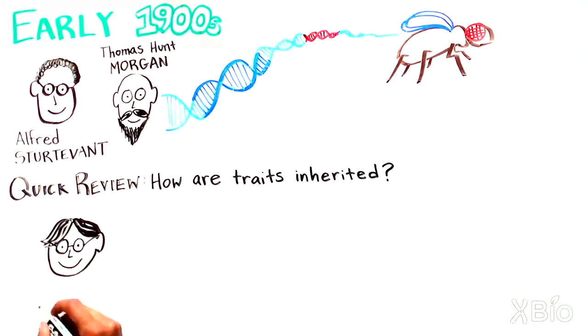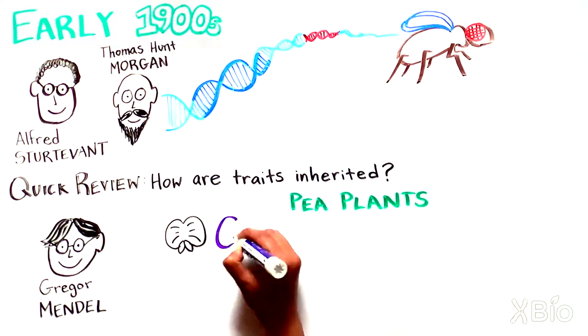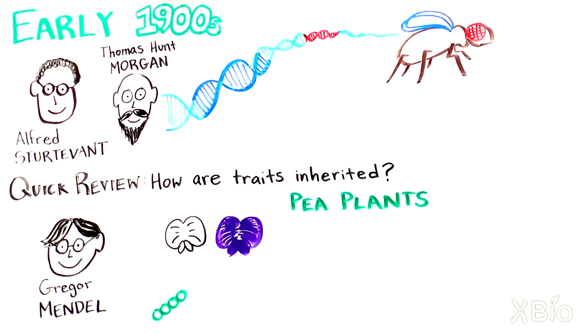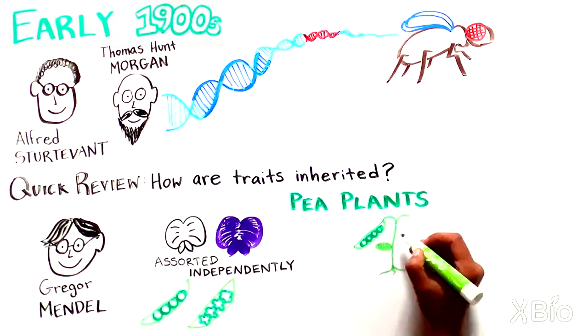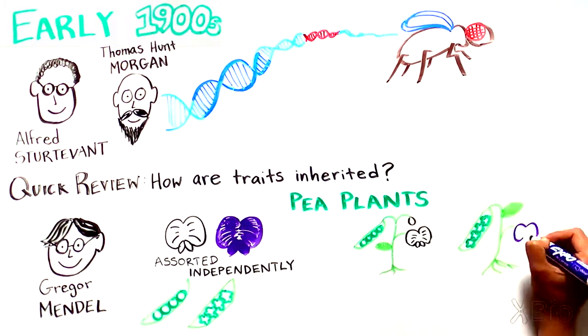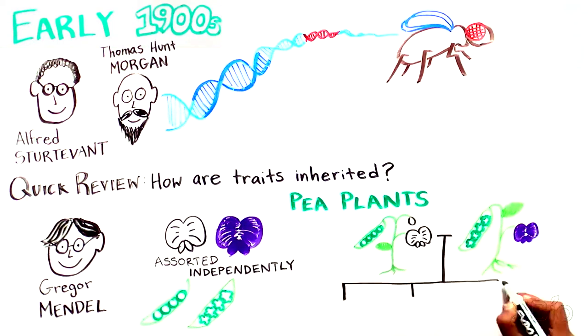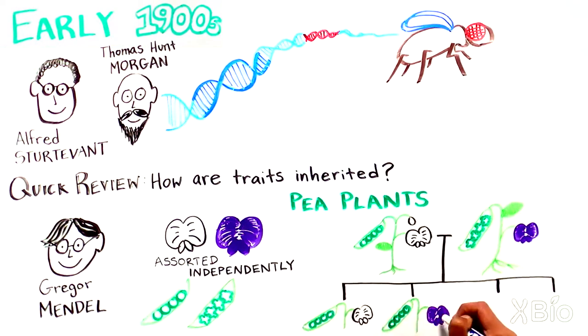Fifty years earlier, Gregor Mendel, a monk who performed experiments on pea plants, noted that traits like whether the plant's flowers were white or purple in color, or whether the peas were round or wrinkled in shape, assorted independently. If you breed a white flower, round pea plant with a purple flower, wrinkled pea plant, you can get any combination of these traits in the offspring plants.